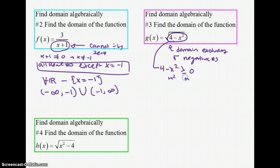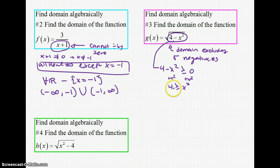Adding x² to both sides gives 4 ≥ x², meaning x² must be less than or equal to 4. Plugging in 0, 1, or 2 and squaring gives values less than or equal to 4, and negative 1 and negative 2 also work. So x is any number between −2 and 2, because 4 minus some x² has to be 4 or smaller.